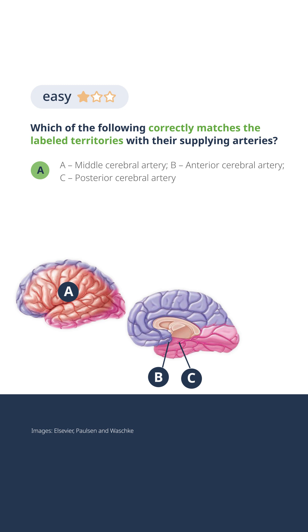Here we see on the medial view, shaded in blue, the distribution of the anterior cerebral artery. A good part of the medial side — all the medial side of the frontal lobe and all the medial side of the parietal lobe — is essentially being supplied here.